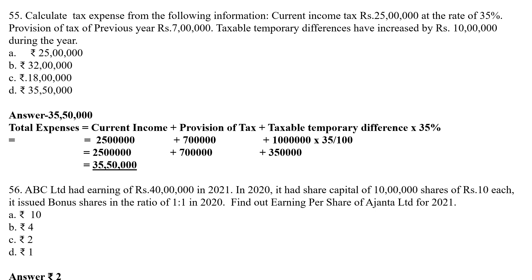Question 56: ABC Limited had earnings of Rs. 40 lakhs in 2021. In 2020, it had share capital of Rs. 10 lakhs of shares of Rs. 10 each. It issued bonus shares in the ratio of 1:1 in 2020. Find earning per share for 2021. The formula is: EPS = Total Earnings ÷ Number of Shares. Number of shares = 1,00,000 (original) + 1,00,000 (bonus) = 2,00,000 shares (20 lakhs worth). So: Rs. 40 lakhs ÷ 20 lakhs = Rs. 2. Earning per share is Rs. 2.